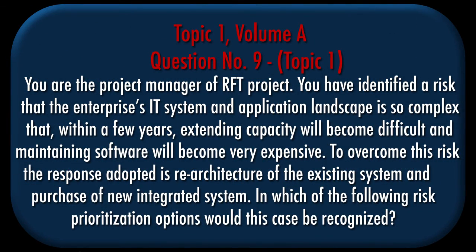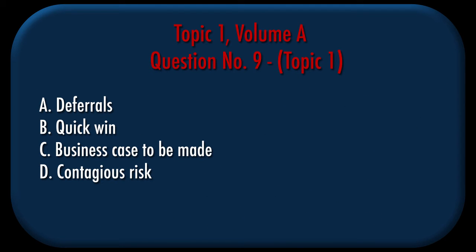Question 9, Topic 1. You are the project manager of the RFT Project. You have identified a risk that the enterprise's IT system and application landscape is so complex that, within a few years, extending capacity will become difficult and maintaining software will become very expensive. To overcome this risk, the response adopted is re-architecture of the existing system and purchase of a new integrated system. In which of the following risk prioritization options would this case be categorized? A. Deferrals. B. Quick win. C. Business case to be made. D. Contagious risk.